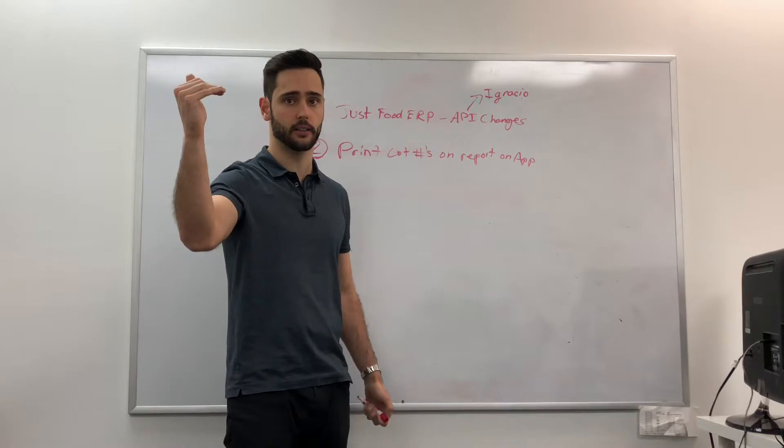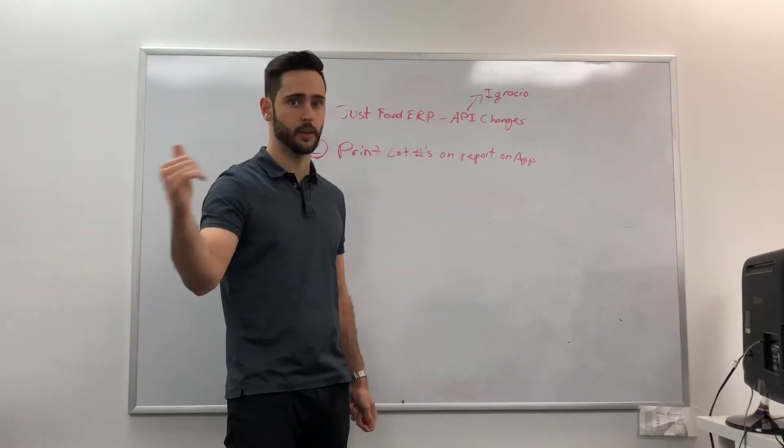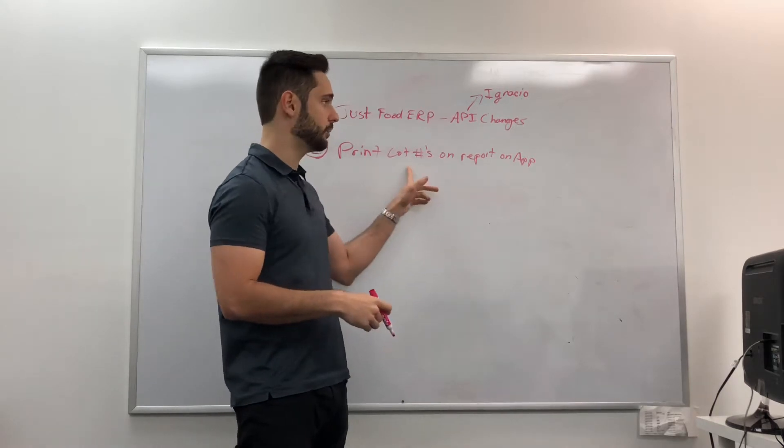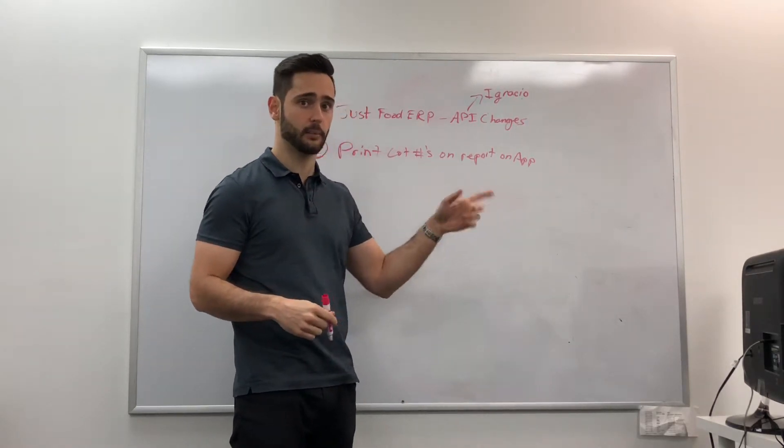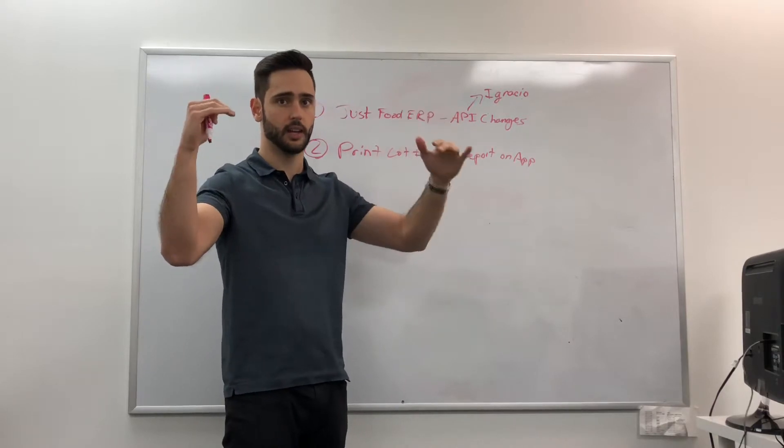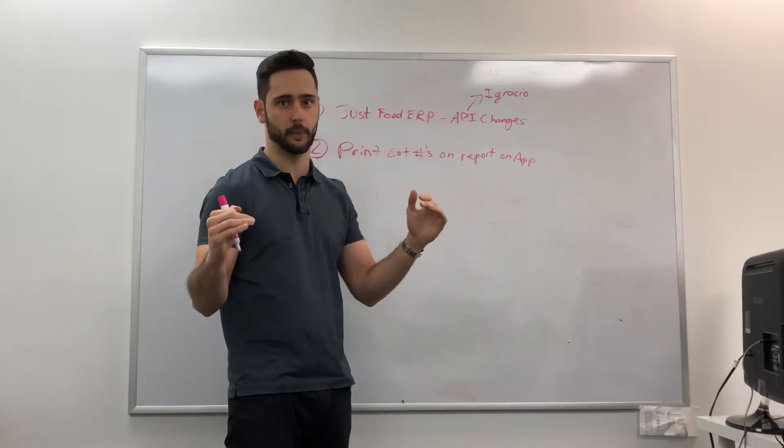This is the on-hand on-the-truck item. What we need to do is print on each of those items the lot number and the respective on-hand quantity—lot number on hand. Why? Because they need to be able to see how much of each lot...